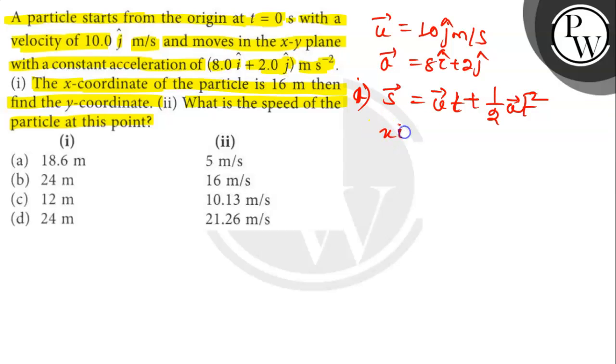So, x i cap plus y j cap is equal to 4 t squared i cap plus 10 t plus t squared j cap.